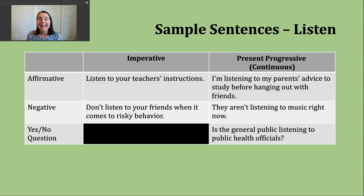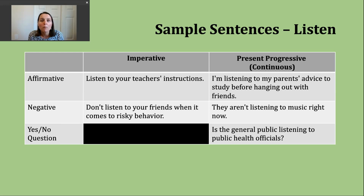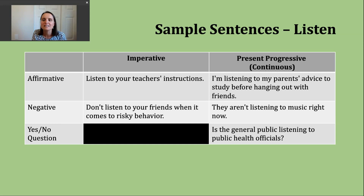To ask a yes-or-no question in the present progressive, start with your be verb in the form that matches your subject, then the subject, then the -ing form of the verb. Example: "Is the general public listening to public health officials?" Here, "general public" refers to the millions of people in the country, but "public" is singular, so we use "is." This is a question many people are asking as COVID cases continue to increase and, unfortunately, COVID deaths as well.